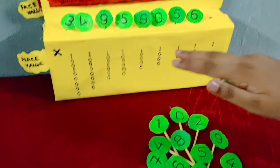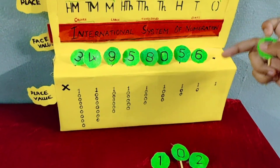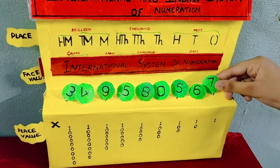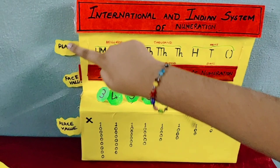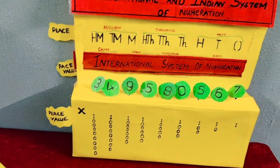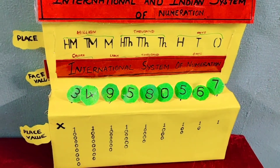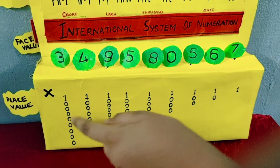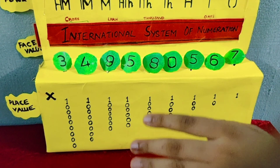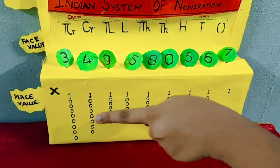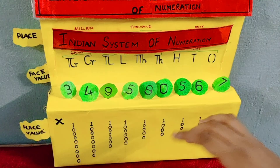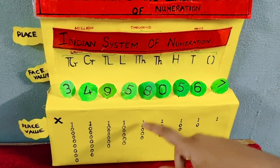You can arrange the number like this. Here, place, face value, and place value are also mentioned. These will help you to keep the place value. These are actually the place of each number. With this, we get the place value easily.